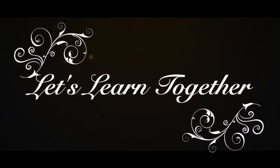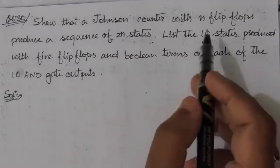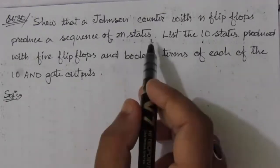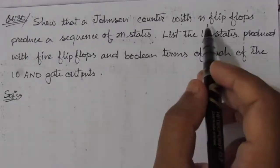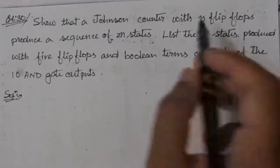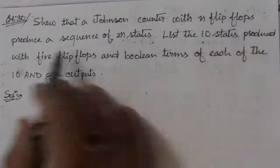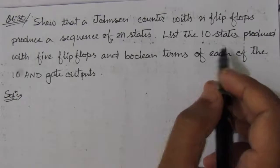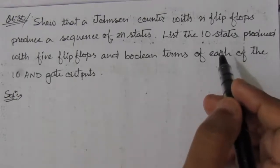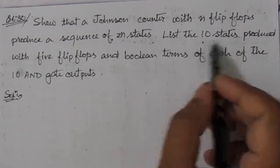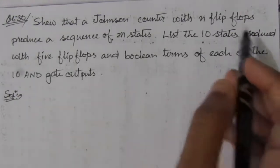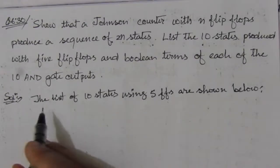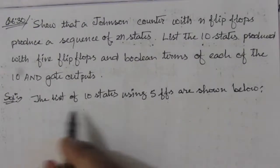In the first part we have to show that we have 2n states where n is the number of flip-flops. This part is almost similar to the second part, so if we consider five flip-flops and show there are 10 states produced, then the first part is automatically proven. We will first make the list of 10 states using five flip-flops.